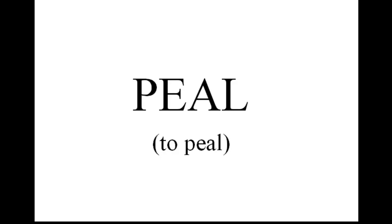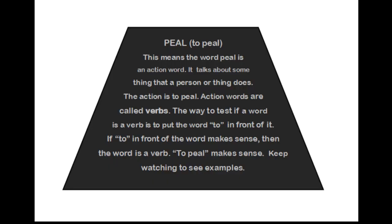To peel. This means the word peel is an action word — it talks about something that a person or thing does. The action is to peel. Action words are called verbs. The way to test if a word is a verb is to put 'to' in front of it. If 'to' in front of the word makes sense, then the word is a verb. To peel makes sense. Keep watching to see examples.